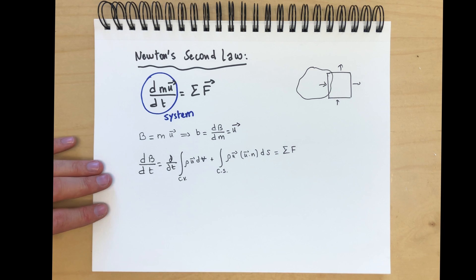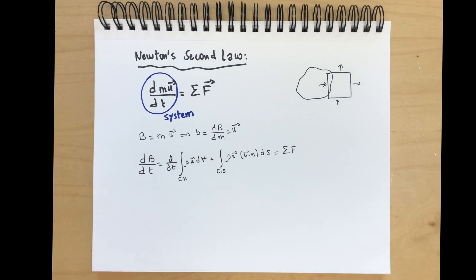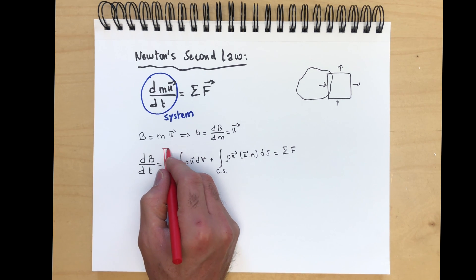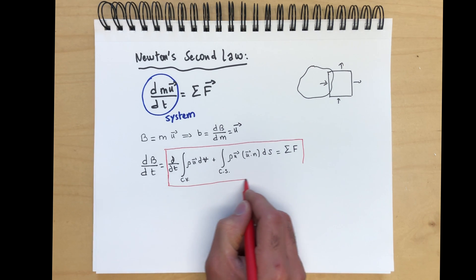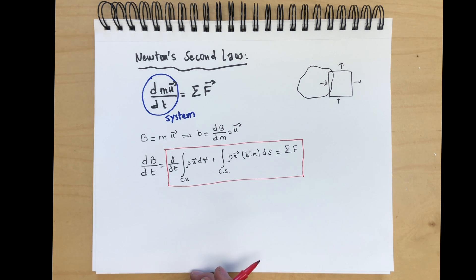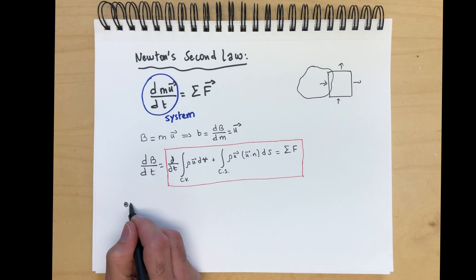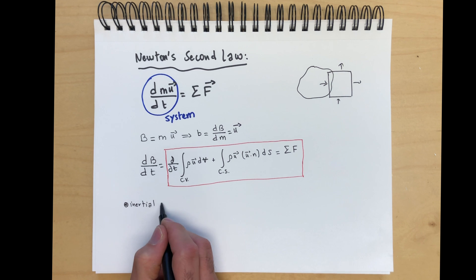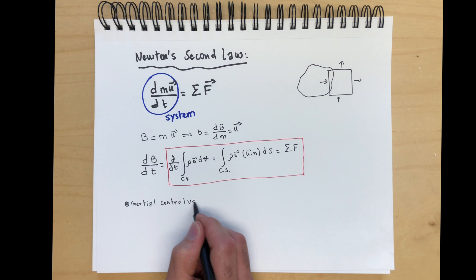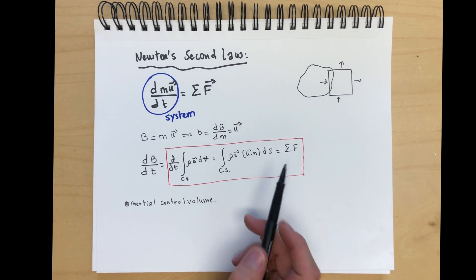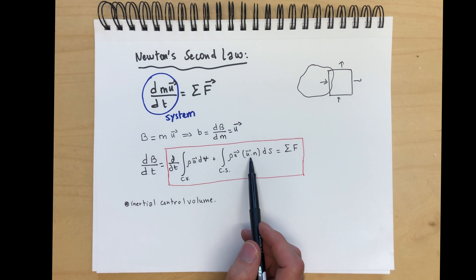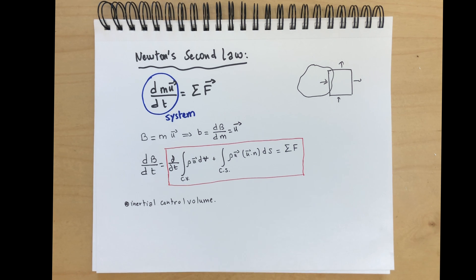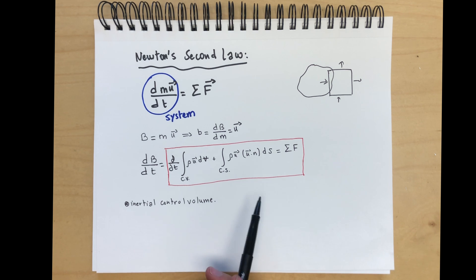We're not going to talk about forces right now; we'll just leave this formula as is. For this integral analysis — really just your undergraduate fluid mechanics approach for this integral form — we are going to use this formula to derive a net force being exerted by a fluid on a structure, for example. A key thing to keep in mind is that this is for an inertial control volume, meaning a control volume that is not accelerating. Here, it's actually fixed, so we're not taking the relative speed of the control volume.